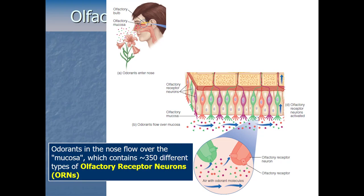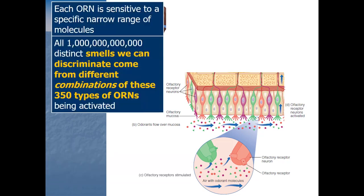ORNs work similarly to taste — using a lock-and-key system. Each ORN is sensitive to a specific narrow range of molecules; only a select few shapes will fit into their keyhole well enough to open up the ion channels and make that neuron fire. Some chemicals activate a given ORN well; other chemicals don't.